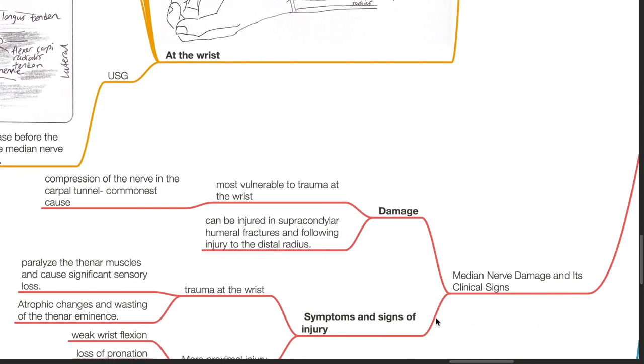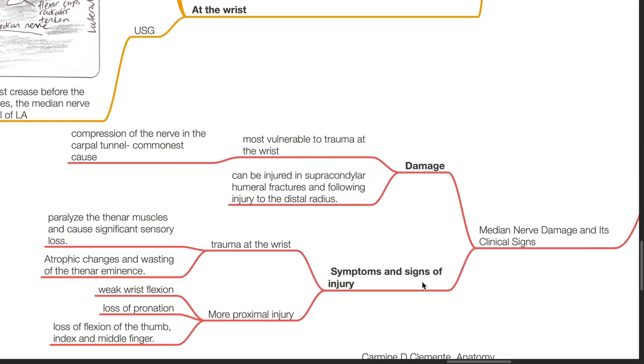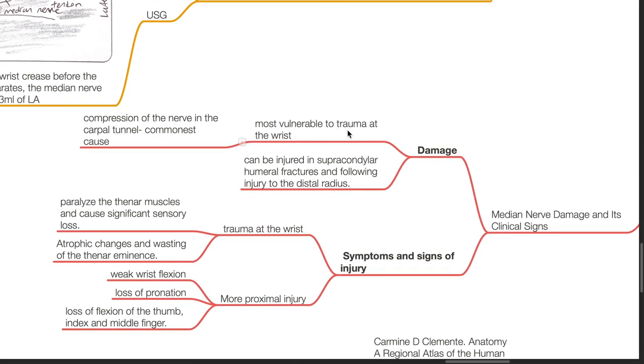Median nerve damage and its clinical signs. It is most vulnerable to trauma at the wrist. Compression of the nerve in the carpal tunnel is the commonest cause. It can be injured in supracondylar humeral fractures and following injury to the distal radius. Symptoms and signs of injury include trauma at the wrist level: paralysis of the thenar muscles and causes significant sensory loss in the median nerve territory. Atrophic changes and wasting of the thenar eminence occurs.